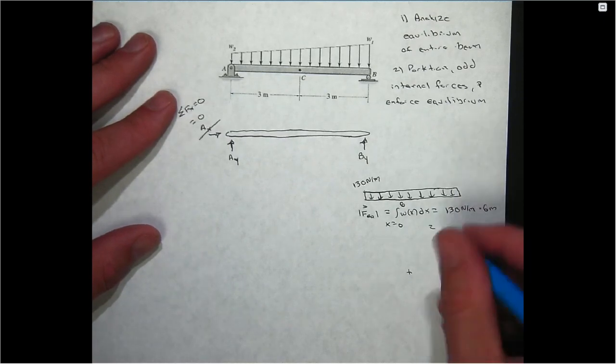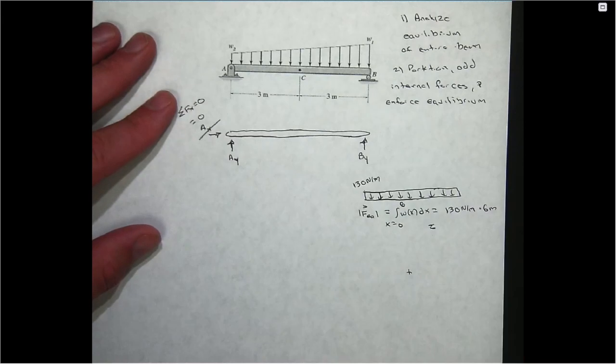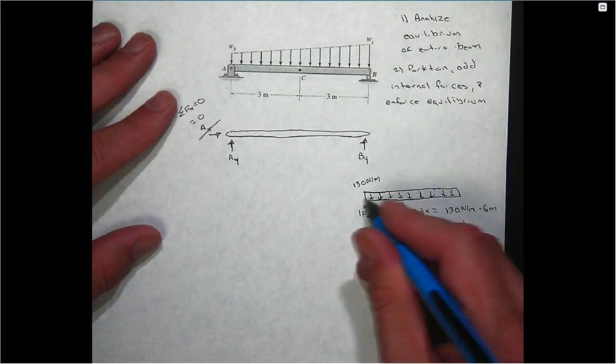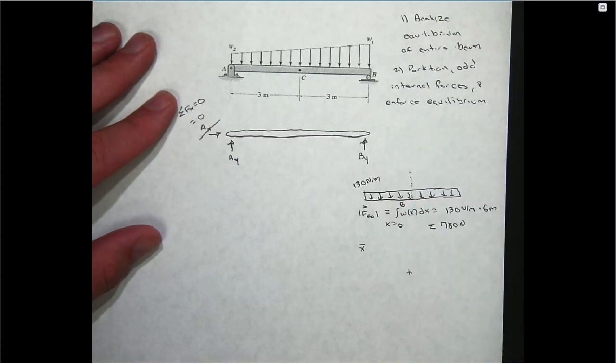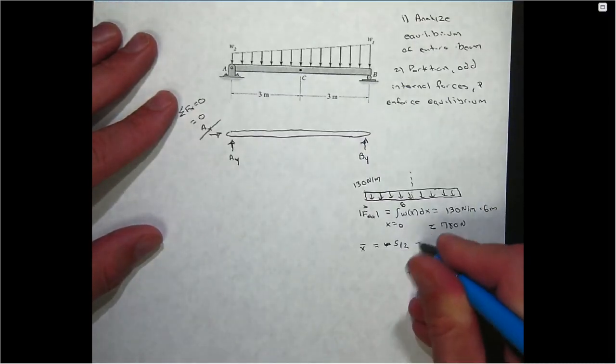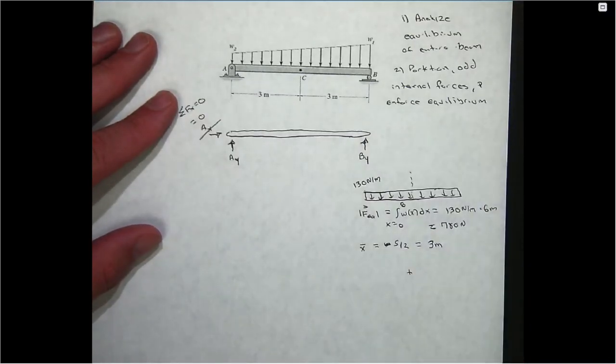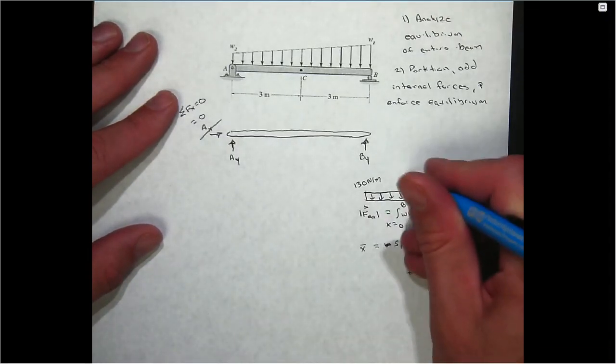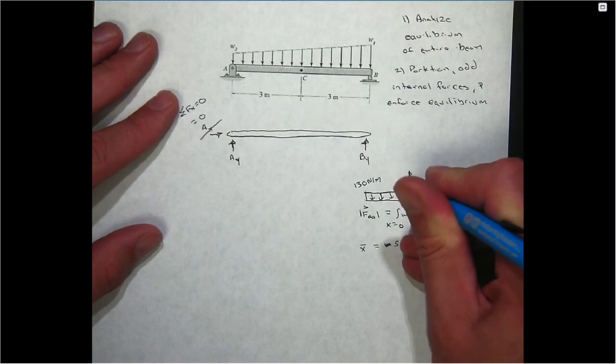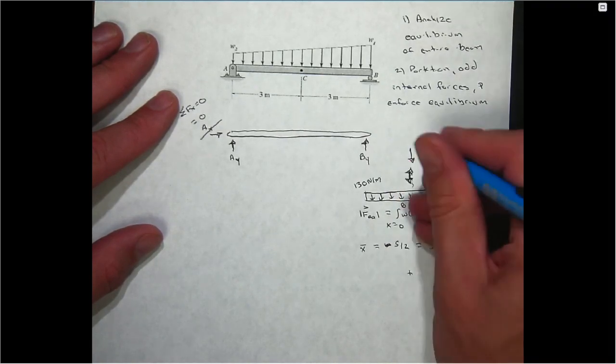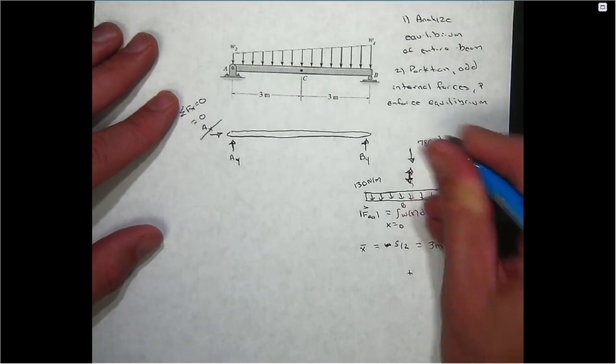I need to determine the magnitude of the equivalent force. The way I always get that is by integrating the density. Since this beam goes from x equals 0 to x equals 6, I'll integrate that uniform density from 0 to 6. Since this is just a rectangle, that will be 130 newtons per meter times 6 meters, which is 780 newtons. The centroid of this shape, since it's uniform, is just going to be half the width. Span divided by 2, which is 3 meters.